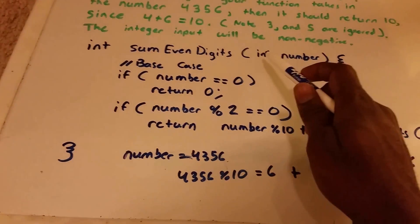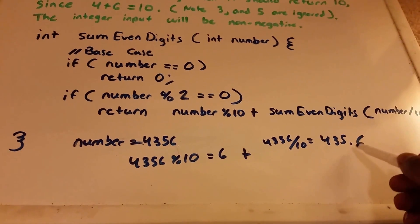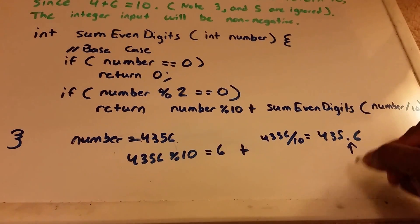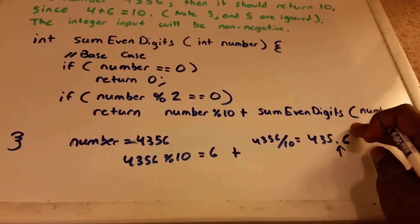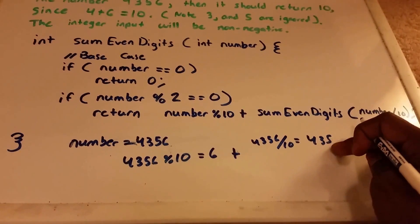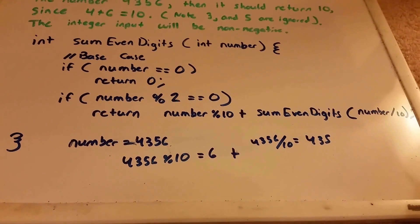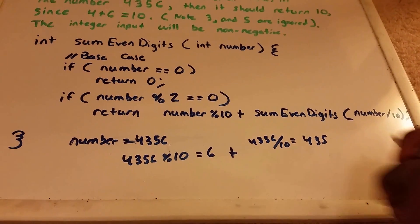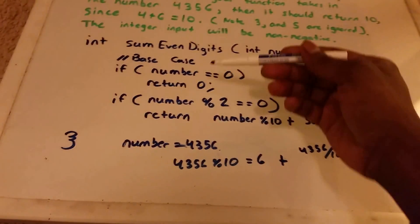But remember, number is an integer. So it cannot be a decimal like this. What it's going to do is it's going to round down. So number now becomes just 435. And then it's going to go through this again.